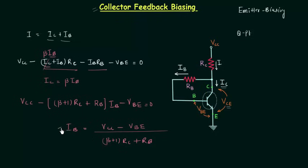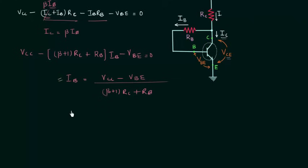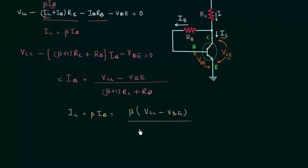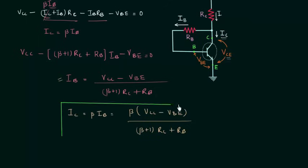This is the expression for base current IB. Now we will find the collector current. The collector current IC is simply beta times IB, giving us: IC equals beta times (VCC minus VBE) divided by [(beta + 1) times RC plus RB]. This is the expression for the collector current and gives us the y-coordinate of the operating point.